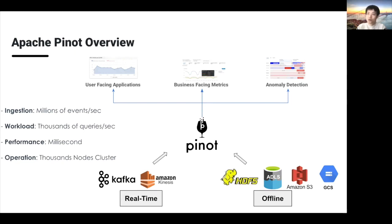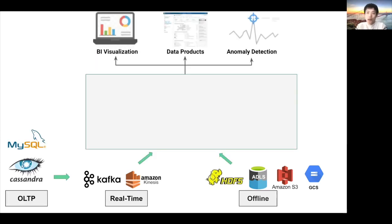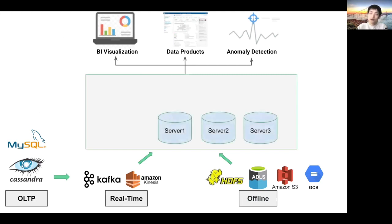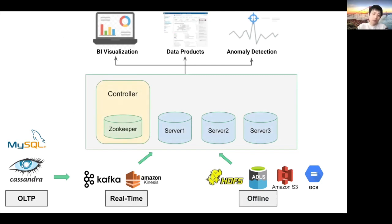Let's expand the Pinot architecture. Pinot has three major components. All Pinot data is stored in Pinot servers — both real-time data consumed from Kafka and batch-loaded data from HDFS or S3. We have a Pinot controller, which is responsible for all cluster and data management, such as data assignment and partition assignment. All Pinot queries go to the Pinot broker, which maintains multiple routing tables and is smart enough to choose the best scatter-gather strategy to collect query results from the selected Pinot servers.